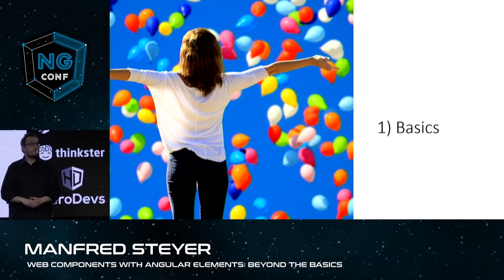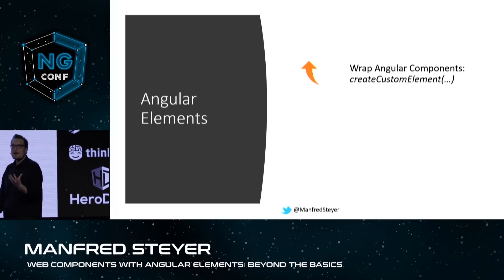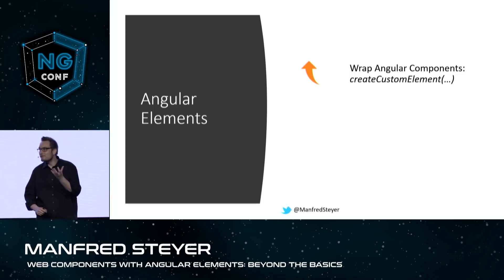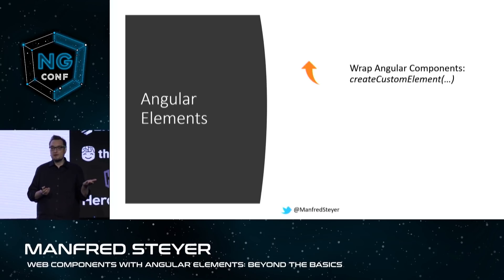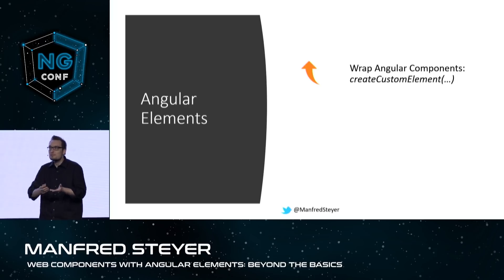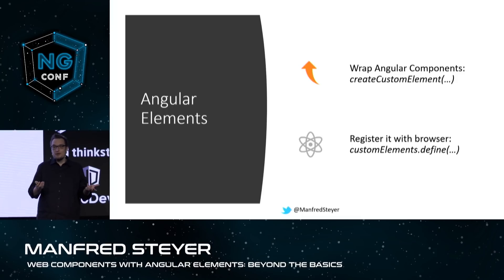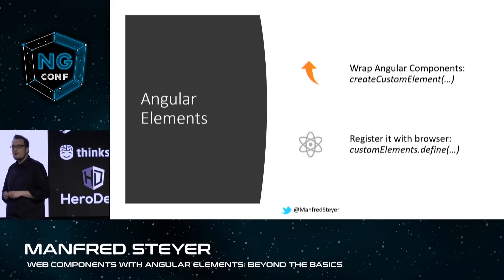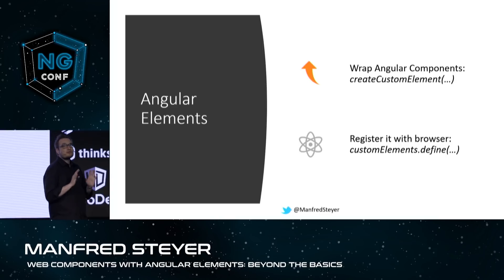Let's get started with the basics — as promised, just one slide. Angular Elements is just about wrapping Angular components. That means you take an ordinary Angular component, you call this function called createCustomElement, and this function exposes a custom element. Your Angular component goes in, the custom element goes out. Then you can register this custom element with the browser API called customElements.define, and now the browser can just render your component. It is as easy as that to get started with standard-conforming components.